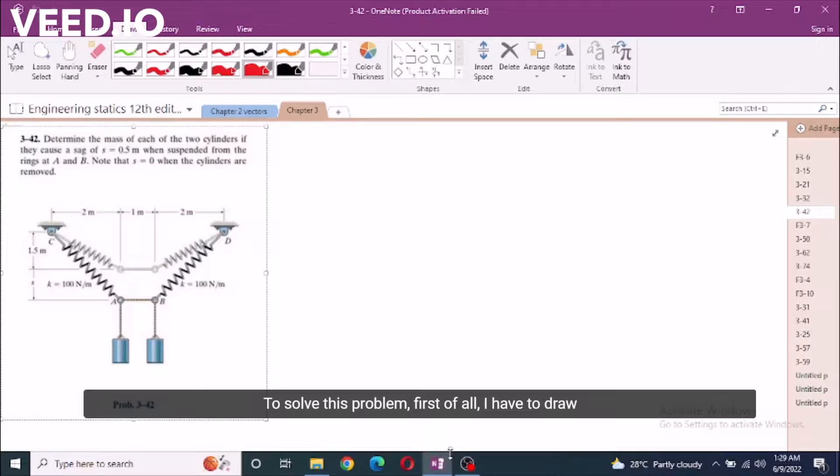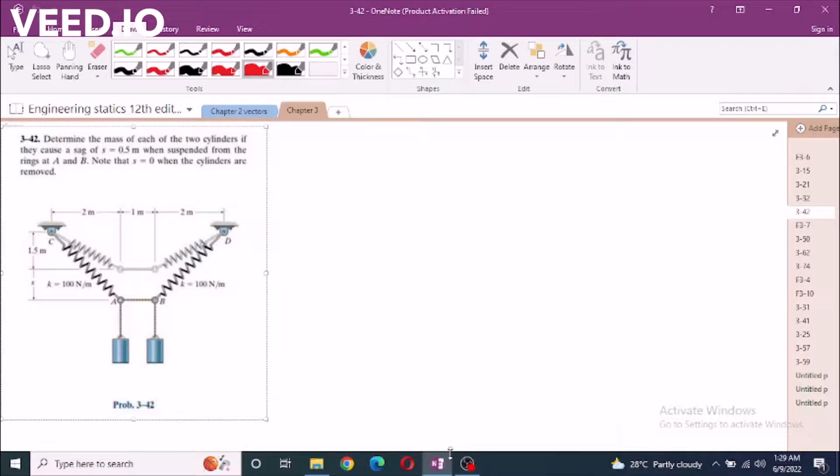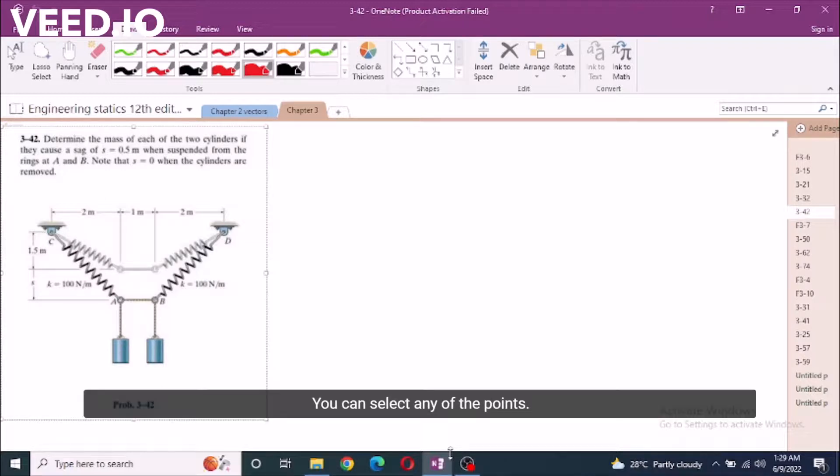To solve this problem, first of all, I have to draw a free body diagram of point either A or B. You can select any of the points. The results would be the same because the sag is the same and the cylinders are also identical. The whole assembly is identical on left and right hand side, so I am selecting point A.